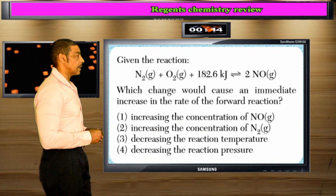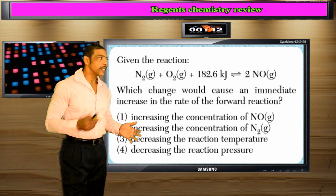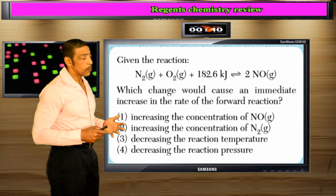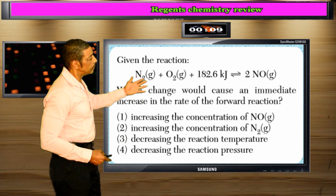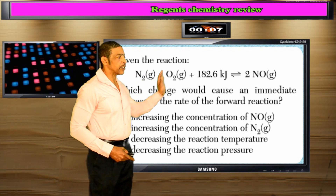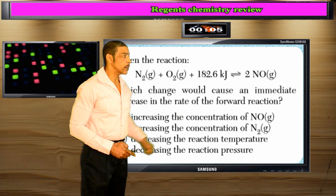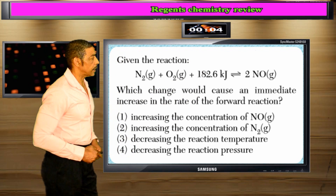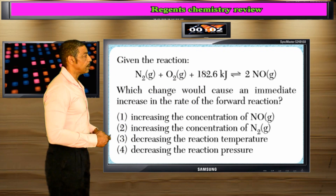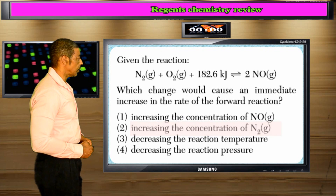And finally, which change will cause an immediate increase in the forward reaction? Increasing anything on the reactant side will drive the reaction to the right, or forward. So the correct answer to this question will be increasing N2.